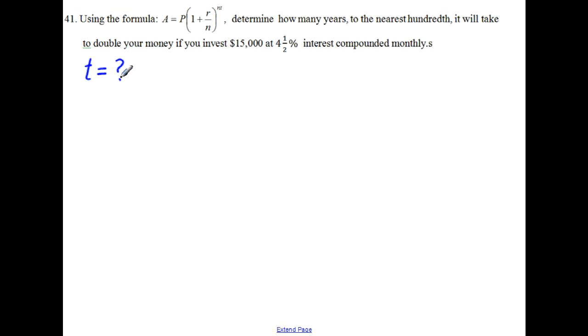So what quantities are given? $15,000 that is for P. When $15,000 was invested, so P equals $15,000.